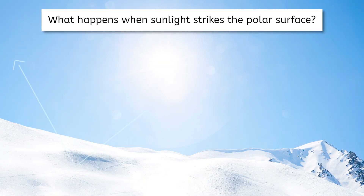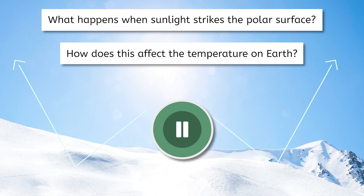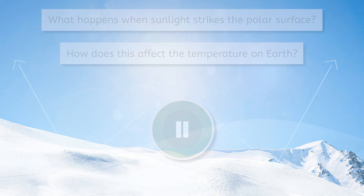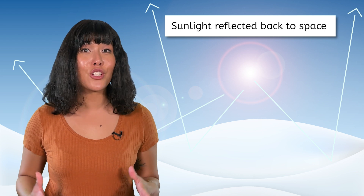This part of our hydrosphere is a particularly hostile environment, with frigid temperatures year-round and very little vegetation. However, these ecosystems are not completely lifeless and are vital to our planet's health. One of their most important functions is directly related to the color of snow. What do you think happens when sunlight strikes the polar surface? How might that affect the temperature on Earth? Pause the video for a moment and make a prediction. Because of their bright white surface, a large percentage of sunlight that strikes the polar regions is reflected back into space, which helps prevent the Earth's surface from becoming too warm.